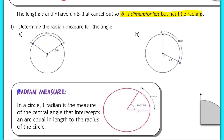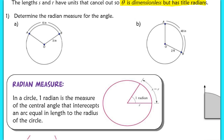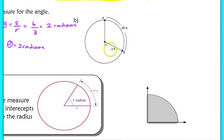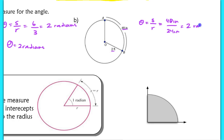Here are our first two examples: determine the radian measure for the angle. Theta is simply the ratio of the arc length over the radius. Since the units are the same, this is 6 over 3, giving 2 radians. In part B, the units are not the same — we have 48 inches and 2 feet. Setting up theta as arc length over radius, the arc length is 48 inches and the radius is 2 feet multiplied by 12 to get 24 inches. So we also get 2 radians.